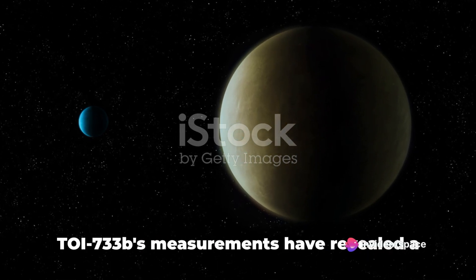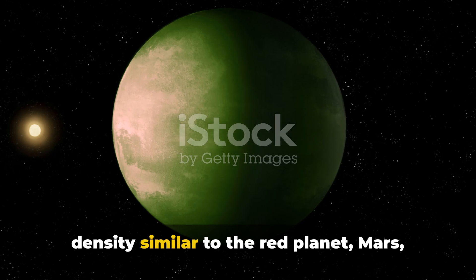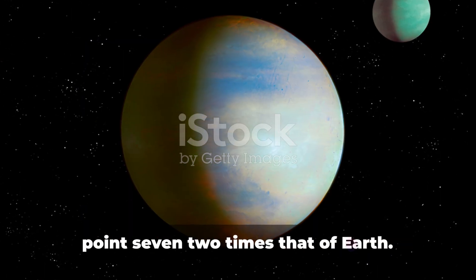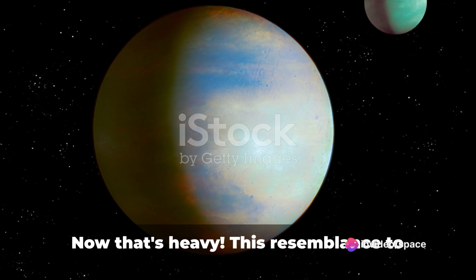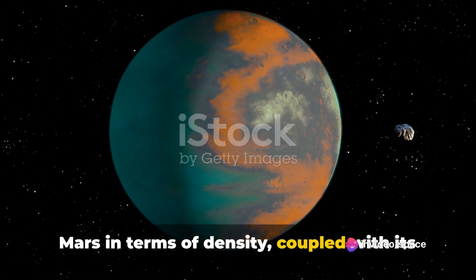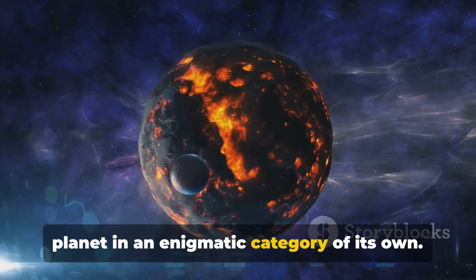But let's delve a bit deeper. TOI-733b's measurements have revealed a density similar to the red planet, Mars, with a mass that is a staggering 5.72 times that of Earth. This resemblance to Mars in terms of density, coupled with its Earth-like size, places this special planet in an enigmatic category of its own.